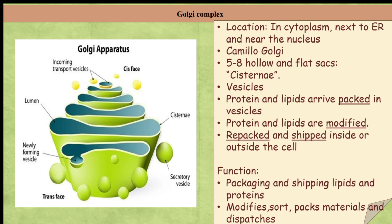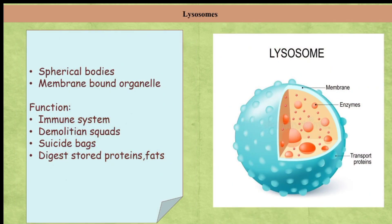The next organelle is lysosomes. Lysosomes are spherical, membrane-bound organelles filled with digestive enzymes. Their functions are: first, they work as an immune system by destroying viruses and bacteria that attack the cell; second, they destroy worn-out cellular organelles and organic debris inside the cell; third, they are known as suicide bags because when a cell becomes old or damaged, the lysosome bursts and enzymes digest their own cells. During starvation, lysosomes also digest stored proteins and fats.